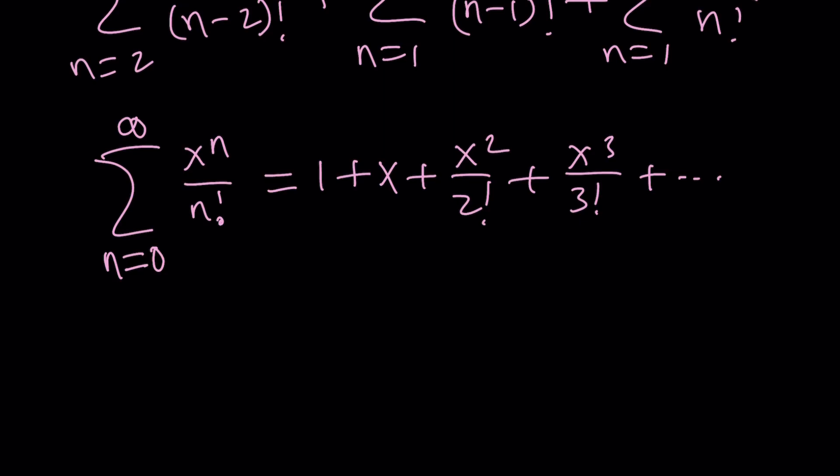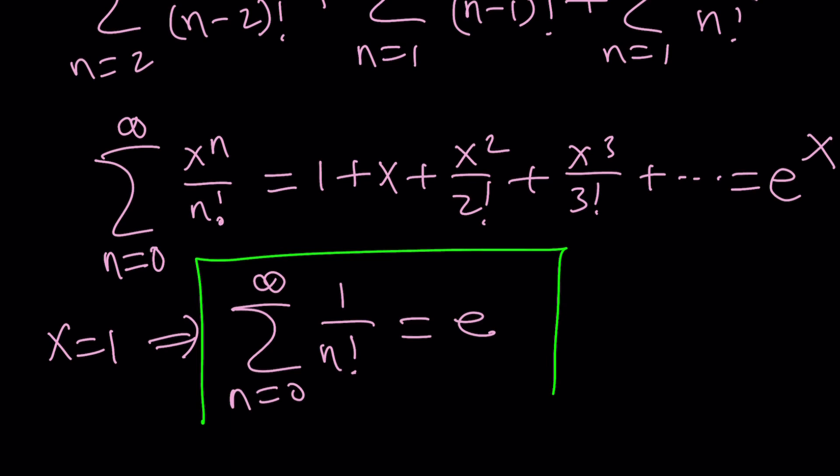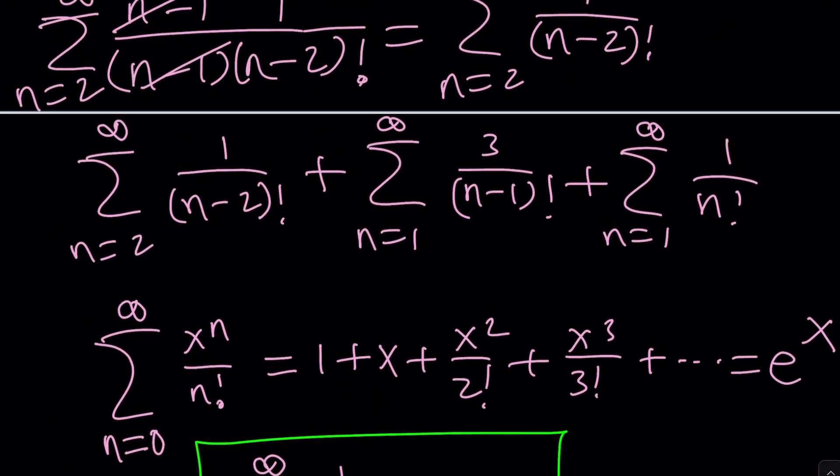What is that equal to? That's a good question. This is equal to e to the power x. That's the Taylor series for e to the power x. If x is 1, then you get n equals 0 to infinity, 1 over n factorial equals e. You get the idea. Now this is what we're going to use for our expression. Notice that it starts with 0. Here, if n is 2, this gives us 0 factorial.